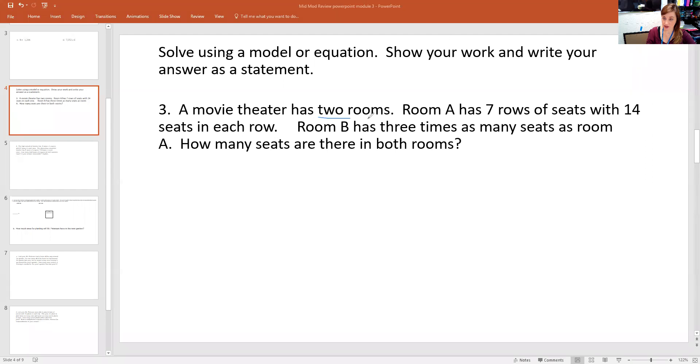So I know it has two rooms. A has seven rows of seats with 14 seats in each row. B has three times as many seats as the first room. So I'm going to start with A. And I know A has seven rows with 14 seats in each row. Room A.